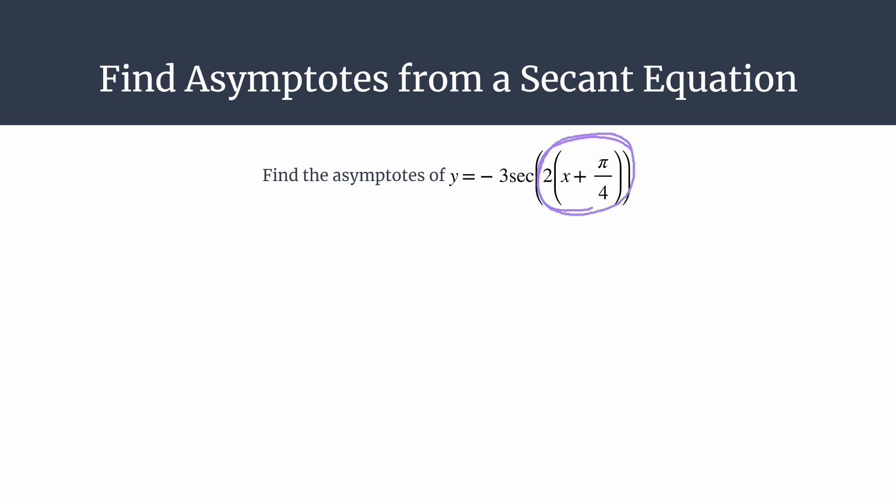So we know our quick and easy trick is to take the inputs of our secant function. So that's here, 2 times the quantity x plus π over 4. And then we set that equal to those parent asymptotes of secant. So those happen at π over 2 plus π k.